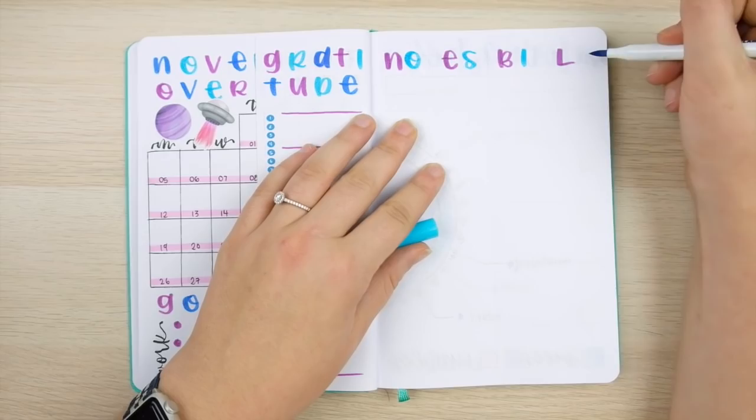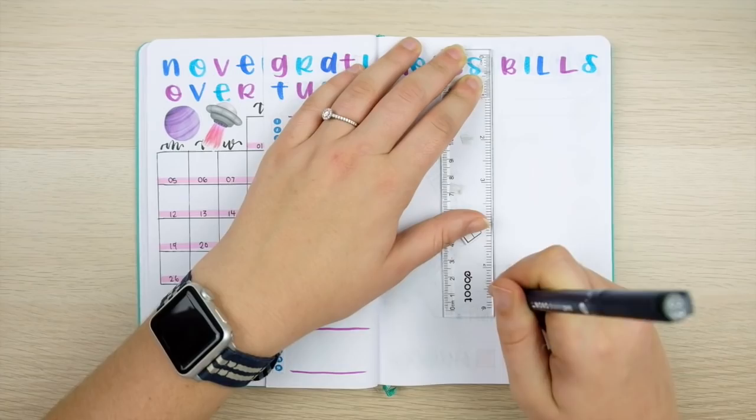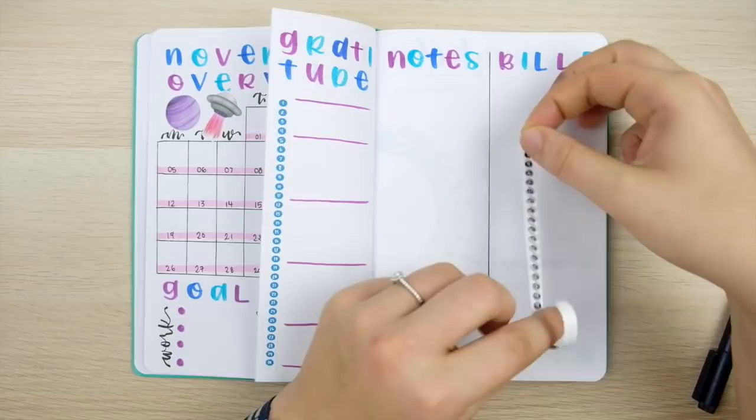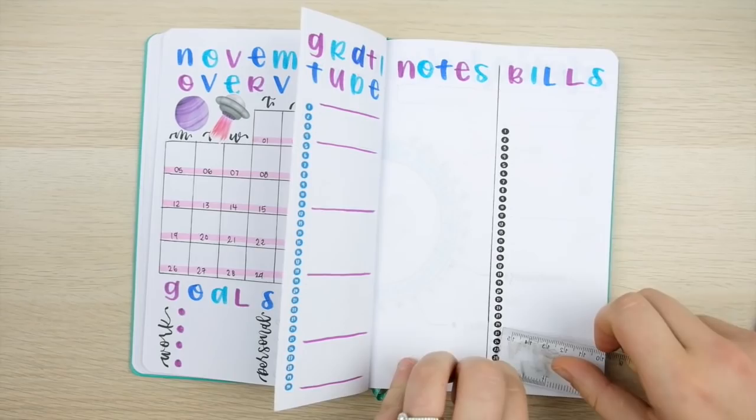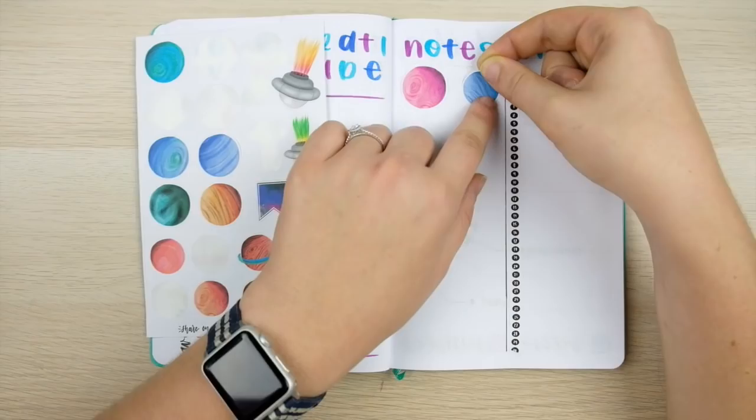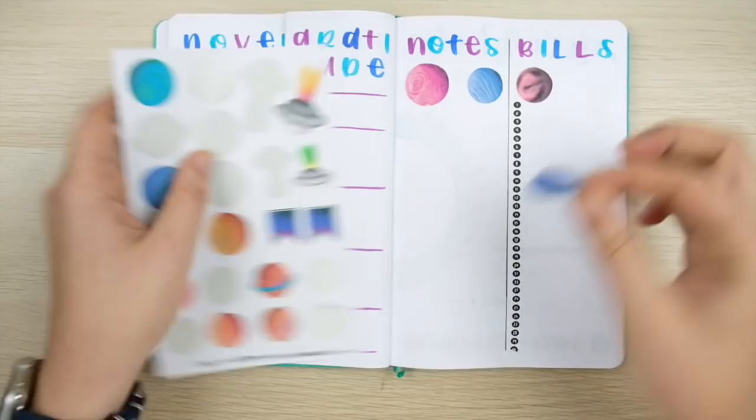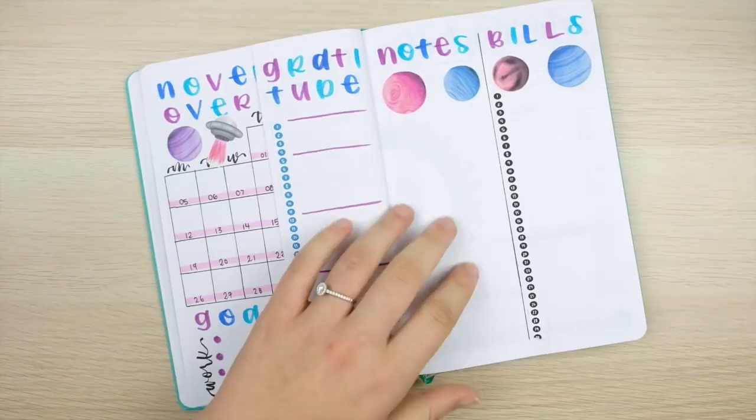When creating any dutch door setup like this be sure to keep in mind what sections are visible when. For example here I made sure that my task list and my bills section are both visible when I'm looking at my calendar so that way I can see at one glance all of the relevant events, tasks, and bills for the month. Then when I turn the flap that's when I can see the gratitude and notes sections which aren't as relevant to my main monthly calendar.